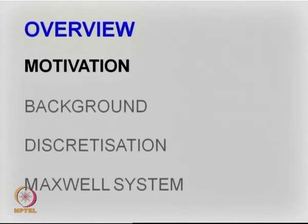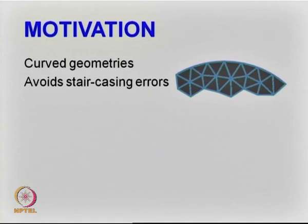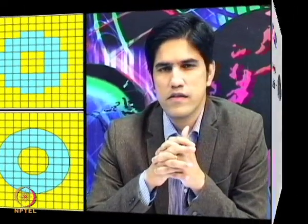Let us start with the motivation. One of the biggest challenges the finite difference method faces is the stair-casing error, especially when you have geometries which are oblique or curved, with very fine details and complex geometrical and physical parameters. The finite difference time domain method has a lot of difficulty because there is significant stair-casing error.